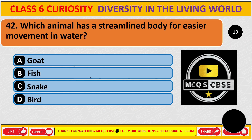Which animal has a streamlined body for easier movement in water? The correct answer is B: fish.